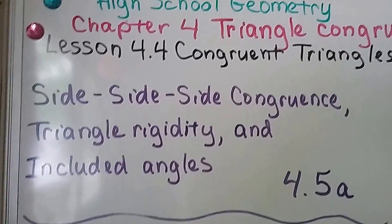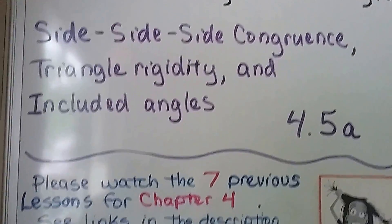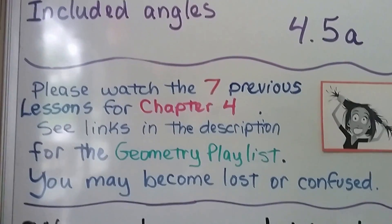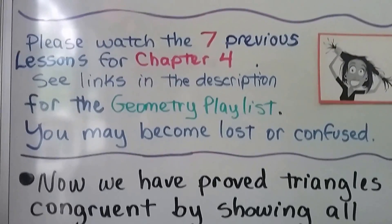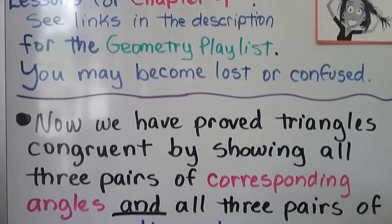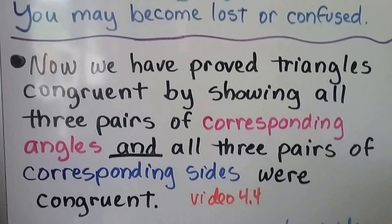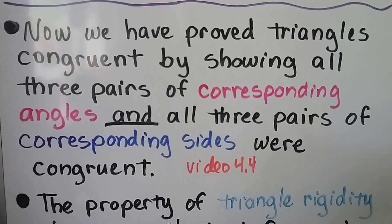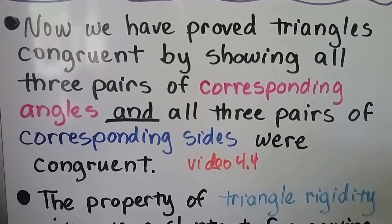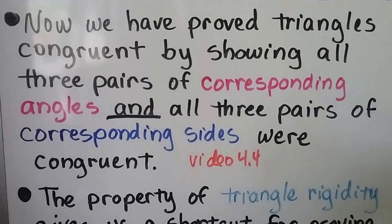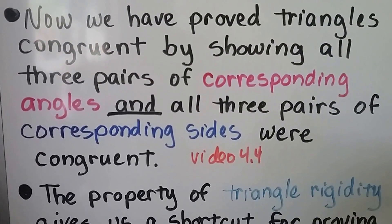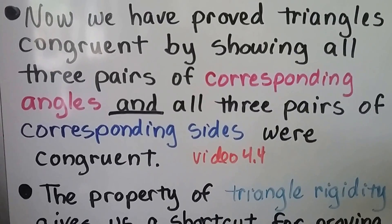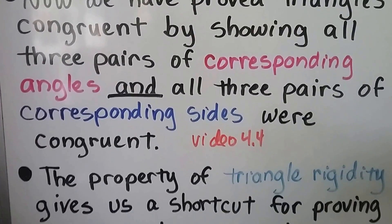This is lesson 4.5a. We've got seven previous lessons for this chapter that are in the geometry playlist in the description. Now we have proved triangles congruent by showing all three pairs of corresponding angles and all three pairs of corresponding sides were congruent. We did that in our last video.